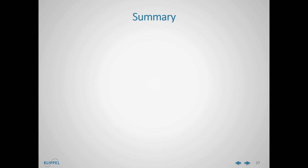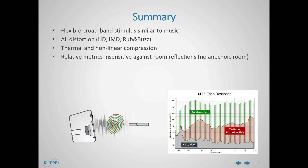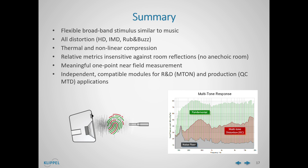Before finishing this video, I would like to summarize the most important characteristics of the multi-tone stimulus and the measurements performed using this kind of signal. First, the multi-tone stimulus is a flexible broadband stimulus which is similar to music. Moreover, all distortion — harmonic, intermodulation, and ribbon bass — are available by a single measurement. Thermal and non-linear compression can be measured as well. Multi-tone related metrics are insensitive against room reflections, so no echo room is required to perform a measurement. A meaningful one-point near-field measurement is enough for some applications. The Clipper system offers two independent and compatible modules for both R&D and production environments: M-TONE and QC-MTD. And last, the multi-tone measurement is compatible with IEC and CTA standards.